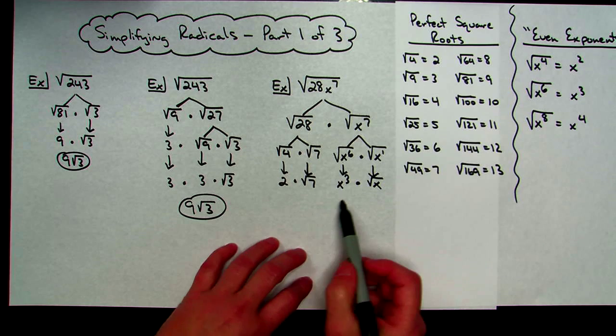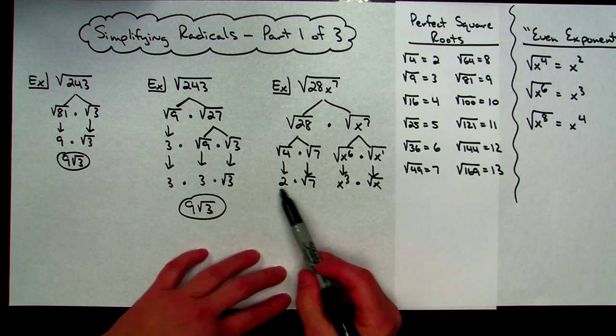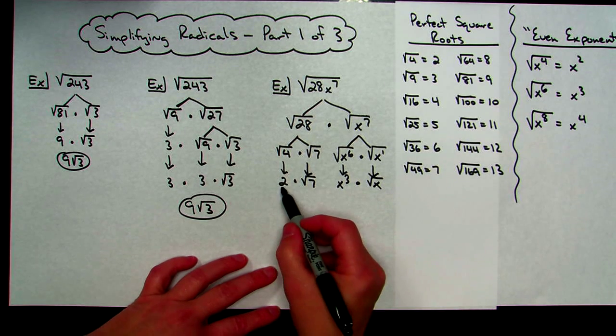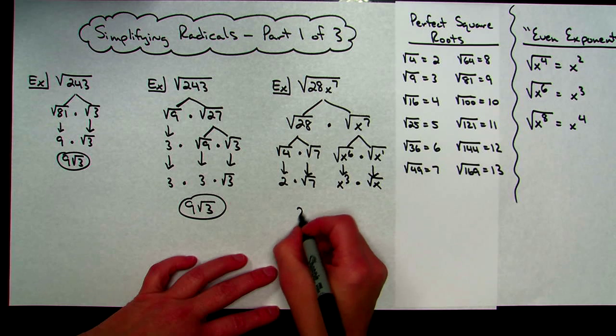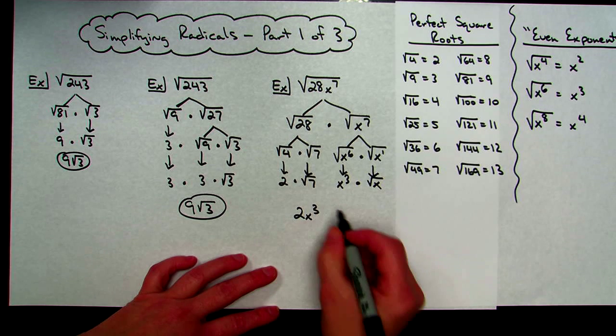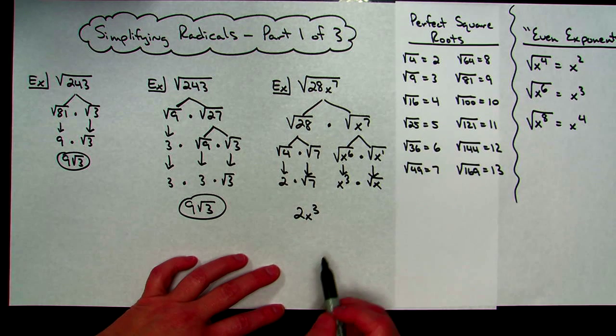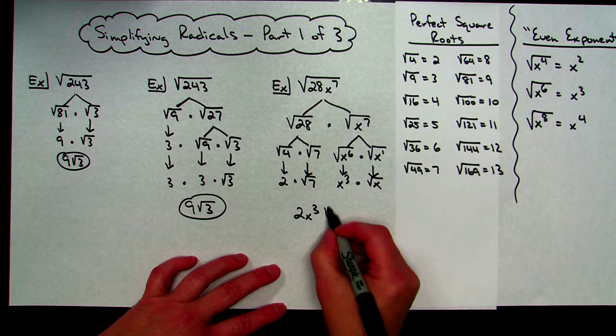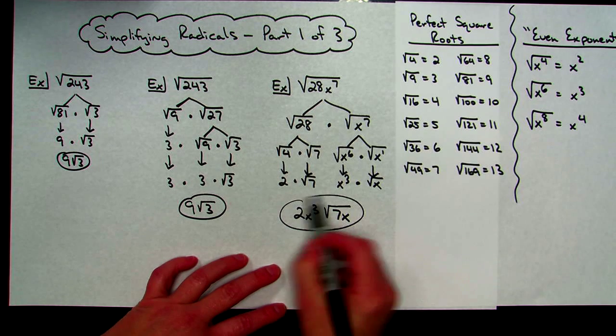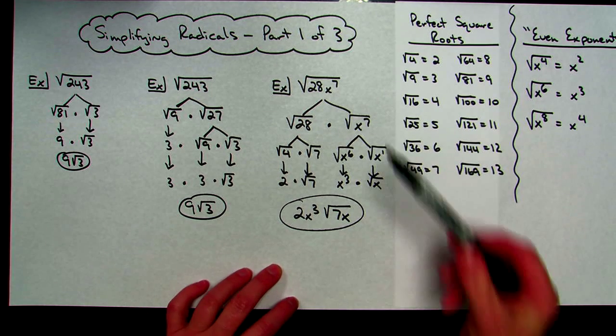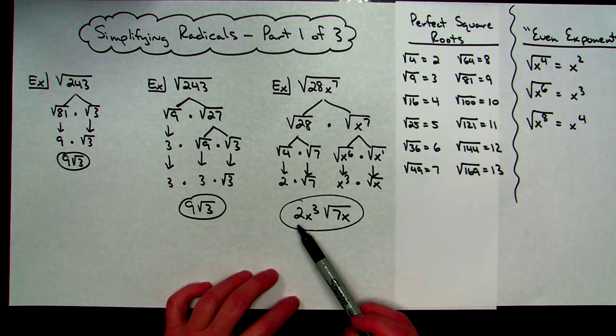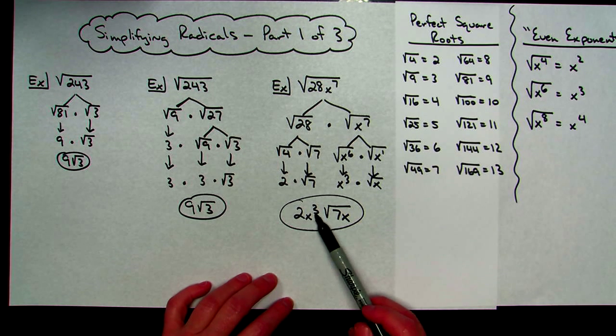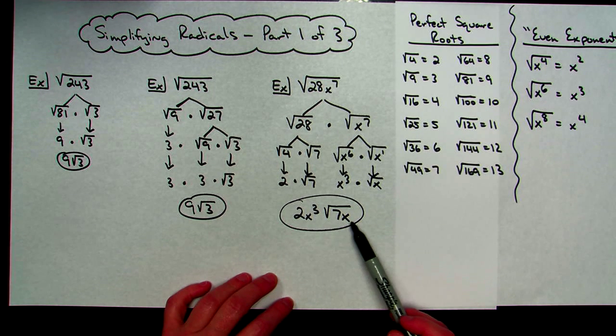So now everything that I have taken the square root of, everything that I've pulled out, I'm going to multiply together. So 2x to the 3rd. Now everything under the radicals, I'm going to multiply. 7 times x is just 7x, so square root of 7x. So the square root of 28x to the 7th simplifies down to 2x to the 3rd times the square root of 7x.